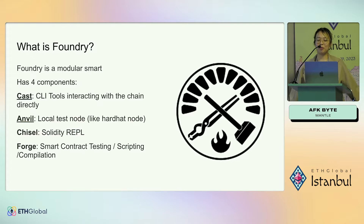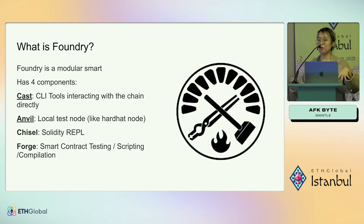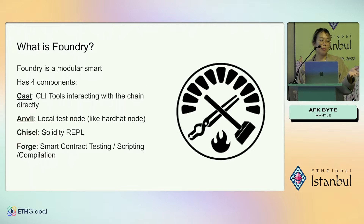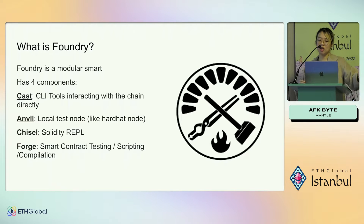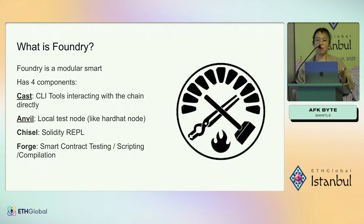So what is Foundry? Foundry is a modular smart contract development framework with four components. You can use Cast, which is CLI tools that interact directly with the chain — really useful for debugging. You've got Anvil, which is a local test node, like the hardhat node but much faster. You have Chisel, which is an encoding library — not necessary if you're brand new, but useful. And then Forge, which most people are familiar with — it's a testing, scripting, and compilation library.